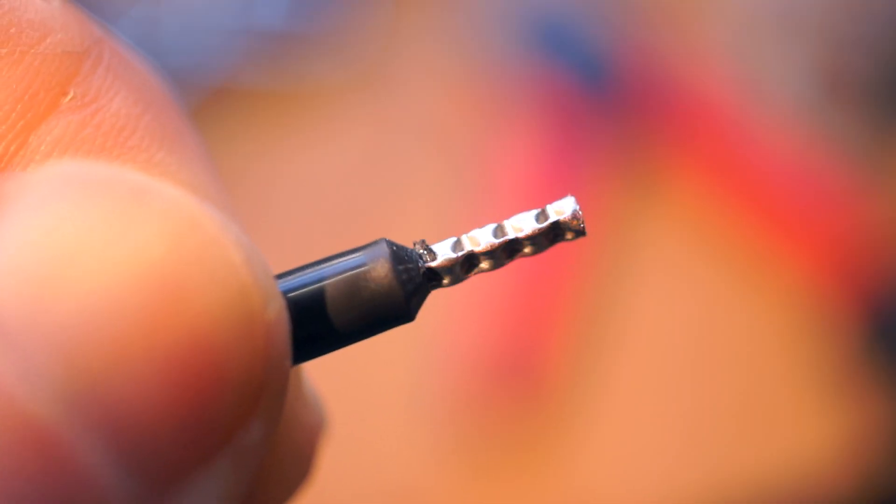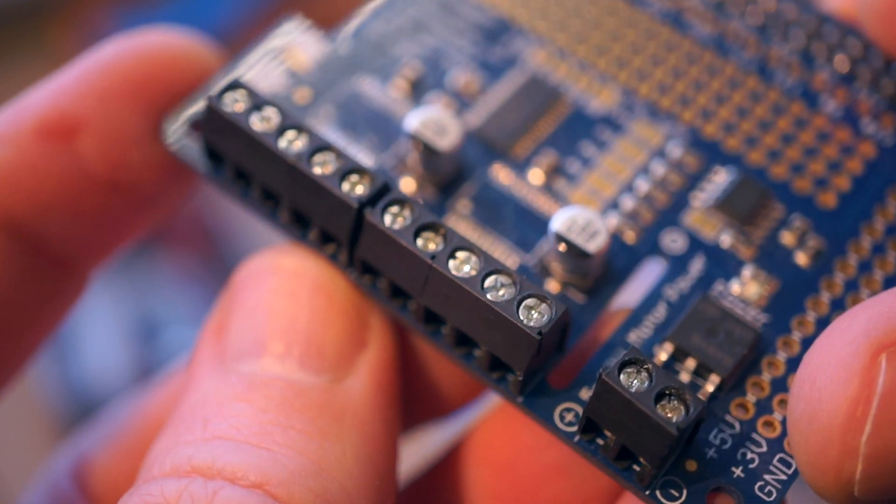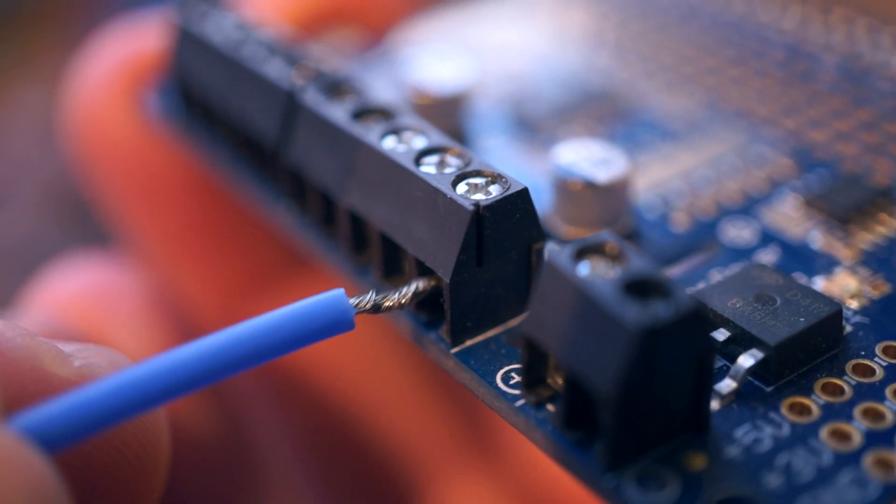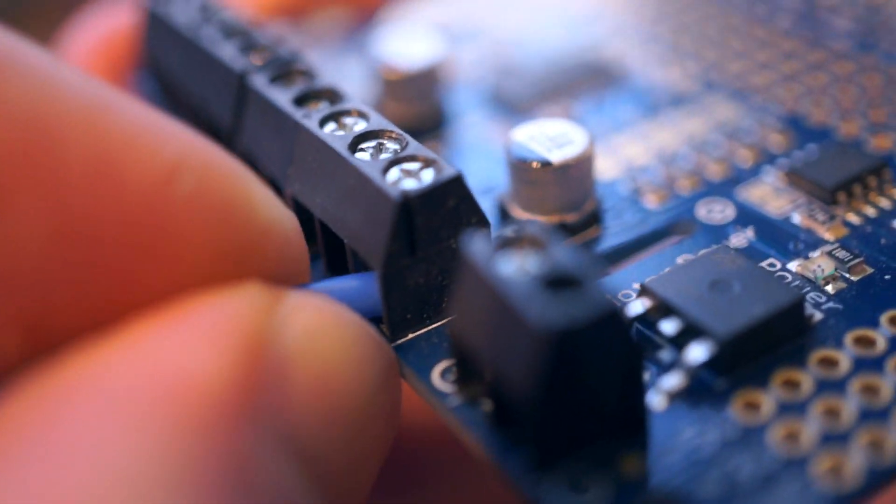The benefit of using a ferrule at the end of your wire may not make sense until you're faced with one of these, a screw terminal. Screw terminals are a useful way to connect and disconnect wires with nothing more than a screwdriver. That's why you'll find them everywhere.